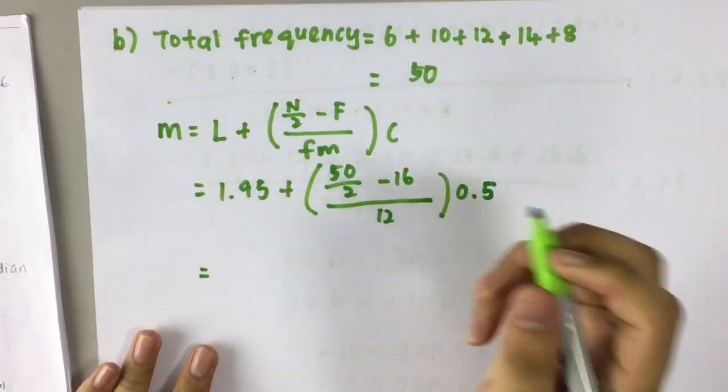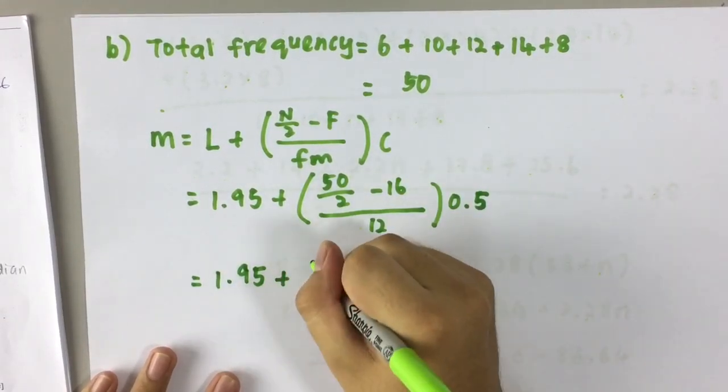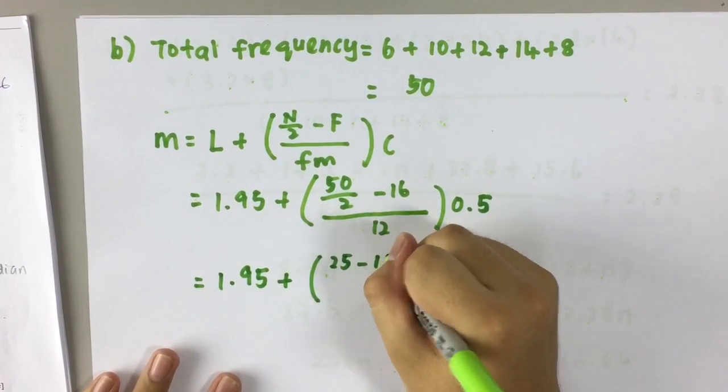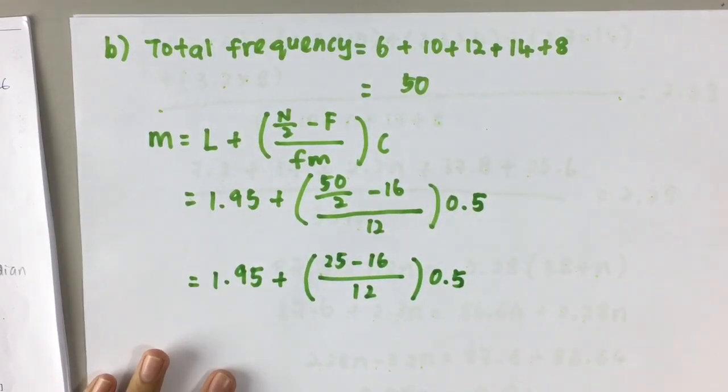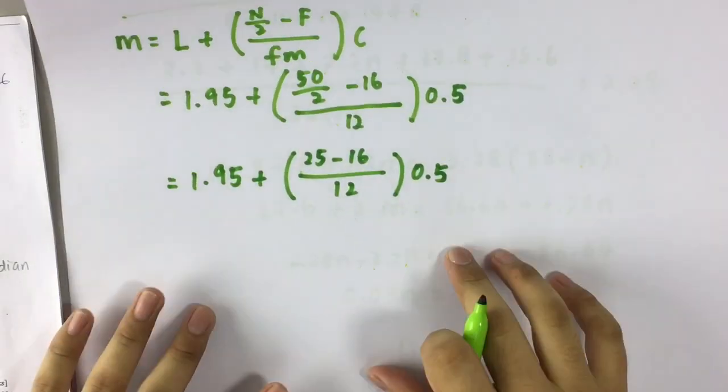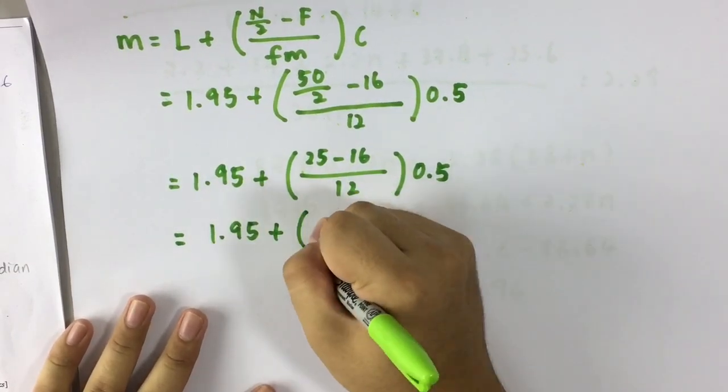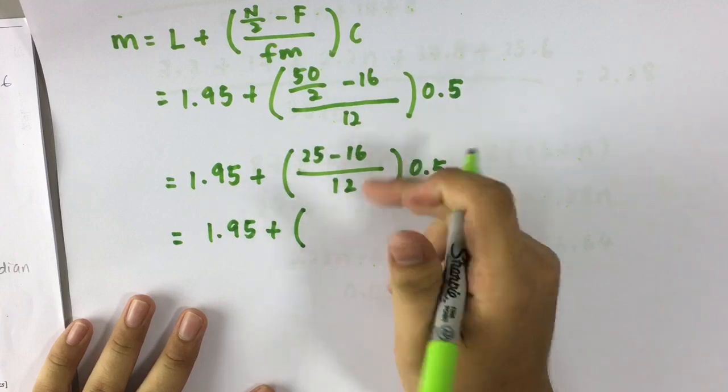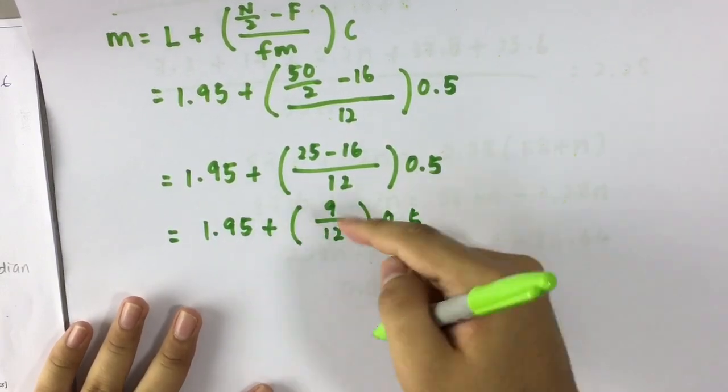Then simplify. 1.5 plus 25 minus 16 divided by 12 times 0.5. We write again, 25 minus 16 equals to 9 over 12 times 0.5. We can simplify again, 9 over 12 is 3 over 4 times 0.5.